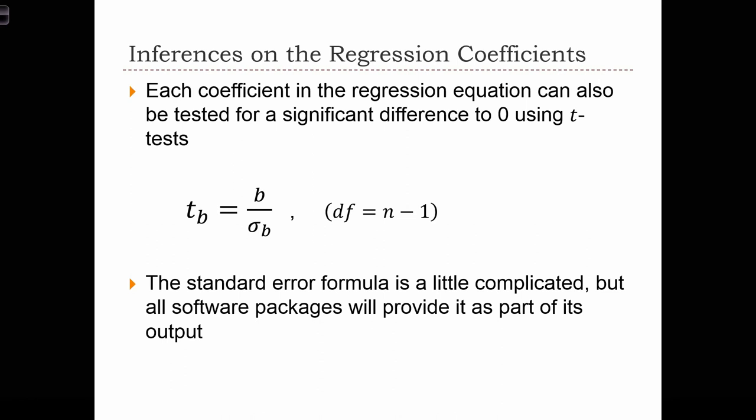We are simply going to create a t statistic by forming a ratio between b, the regression coefficient, and sigma sub b, the standard error of the regression coefficient. This is going to be t distributed with n minus 1 degrees of freedom.